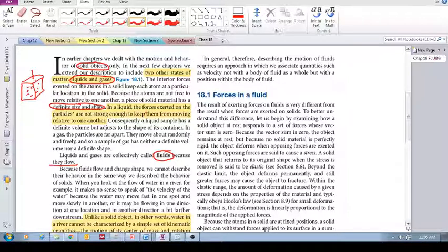However, liquids, in a liquid, the forces exerted on the particles are not strong enough to keep the particles from moving relative to one another. Not strong enough. So they flow. Liquids flow. Even though they have a definite volume, they adjust to the type of container that they're in. They adjust to whatever they're in. So their shape changes. Even though they might have a fixed volume, their shape changes according to the type of container that it's in.